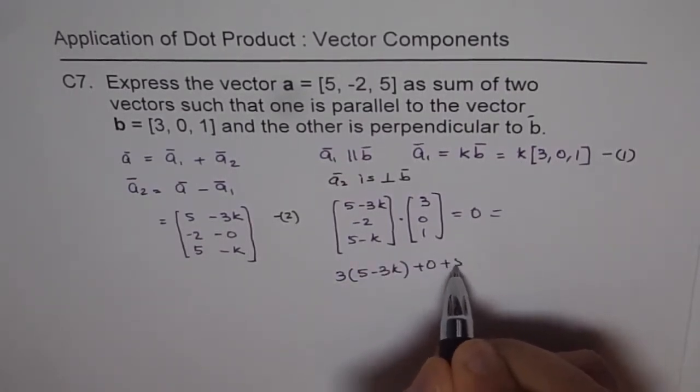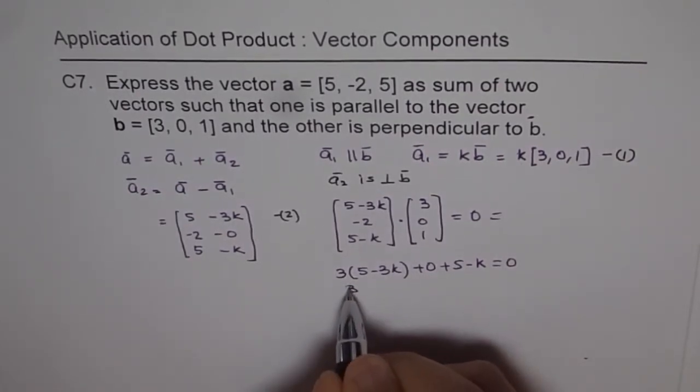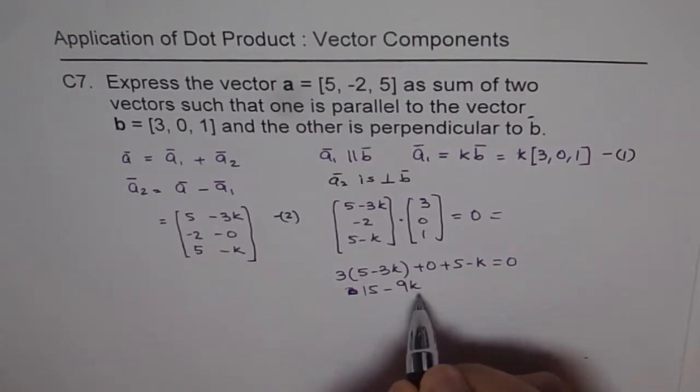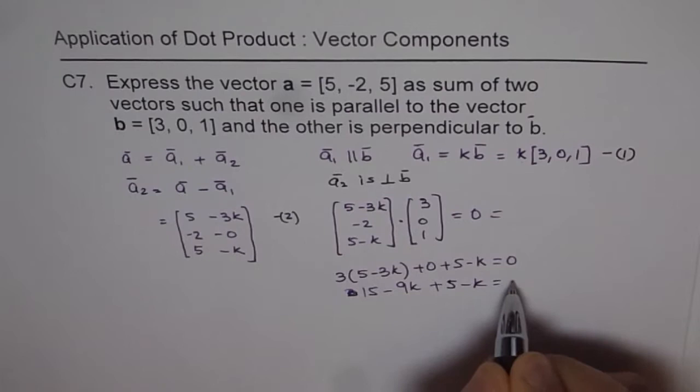So plus (5 - k) equals 0. So that is 15 - 9k + 5 - k equals 0.